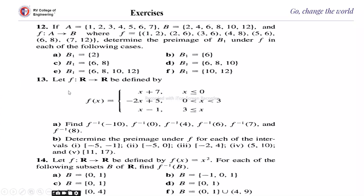Next we look at questions where the function is given as a piecewise (split) function. f(x) is defined as: x + 7 if x ≤ 0; -2x + 5 if 0 < x < 3; and x - 1 if x ≥ 3. Find f inverse of some values and determine the preimage under each case.